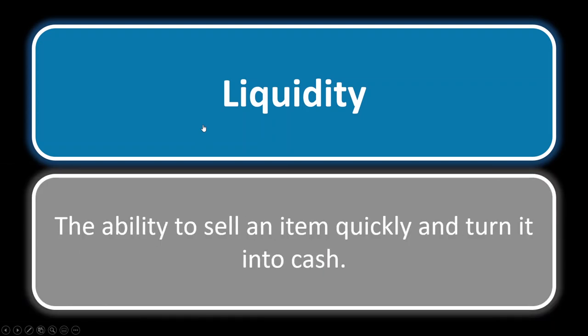Liquidity. Real estate is not a liquid asset — it's illiquid. Liquidity refers to how fast you can convert an item into cash. Real estate takes time to sell, so you can't decide on a whim to sell it and get money that day. Stocks, for instance, are considered a relatively liquid asset because you can convert them to cash much quicker than real estate.